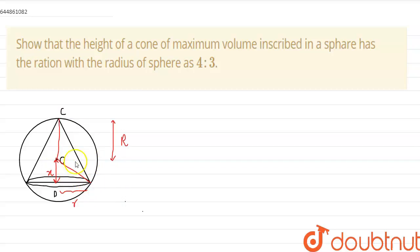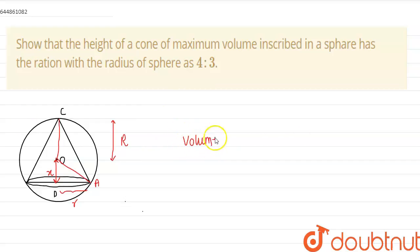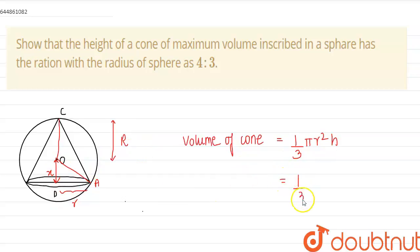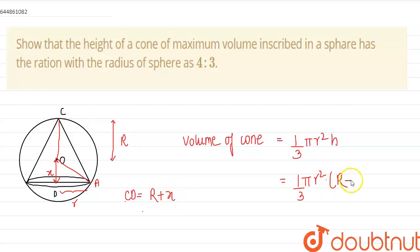We can take this distance as X and join the center to the edge. Now we have the dimensions — we can mark this point as OA. So now we have all the given dimensions. We have to prove that the height of the cone of maximum volume inscribed in a sphere has the ratio with the radius of the sphere as 4 by 3. So we need to maximize the volume. The height of the cone is CD, which is equal to R plus X.